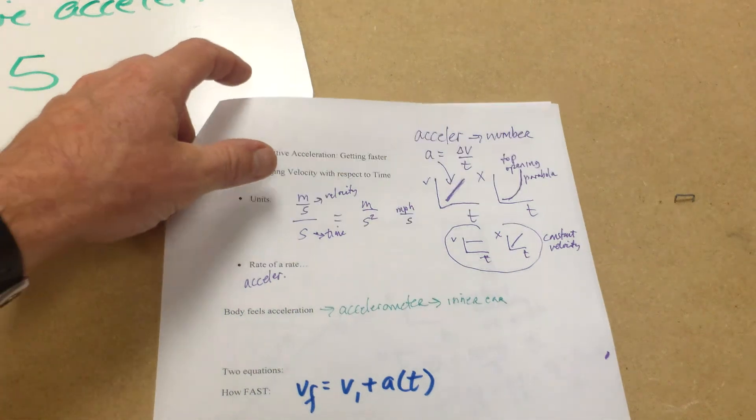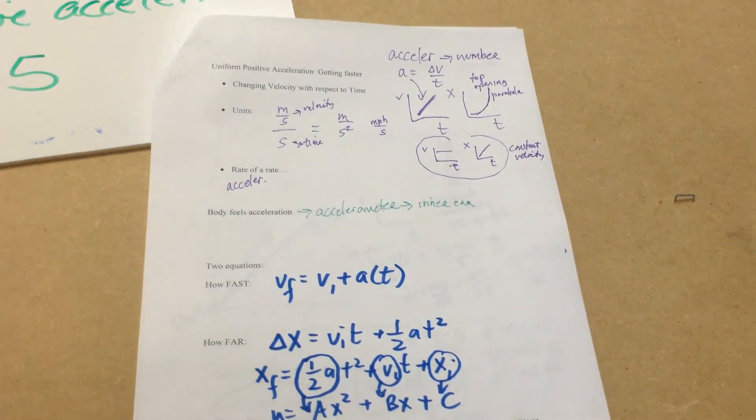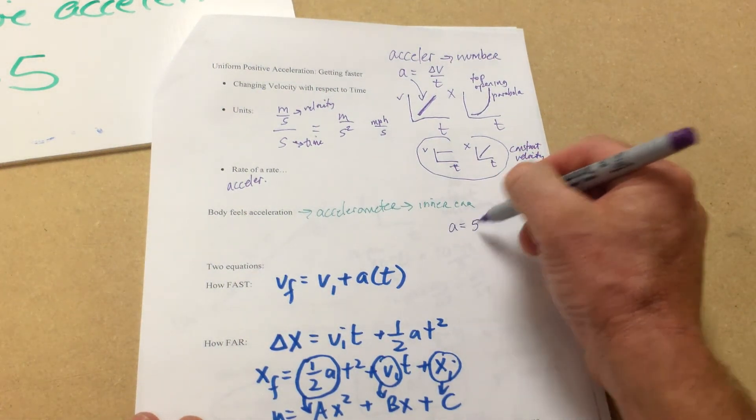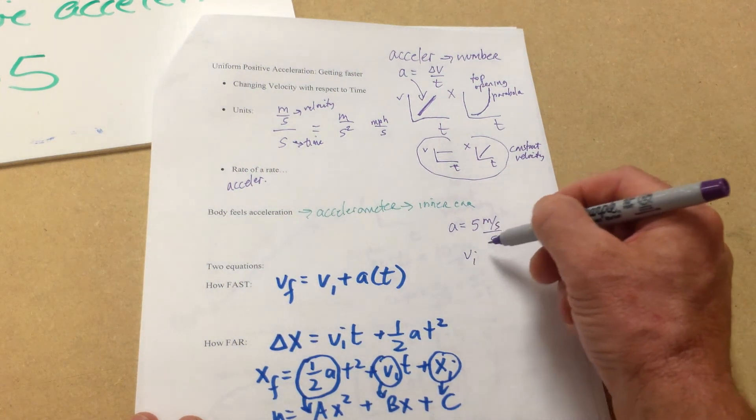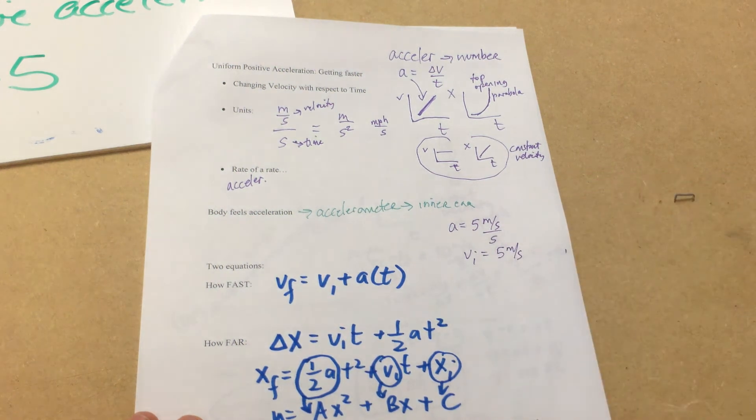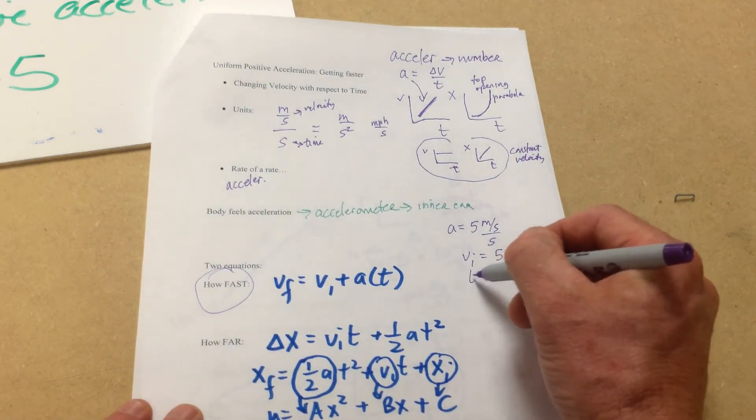Well, we talked a little bit about these equations. Let's see maybe how we might use those equations. So let's maybe say our acceleration is five meters per second per second, and the car has an initial velocity of maybe five meters per second. We could say, well, how fast is the car going after six seconds?